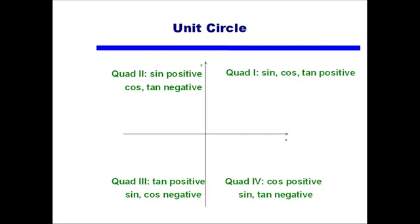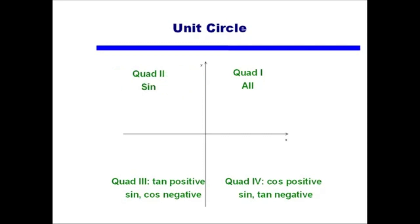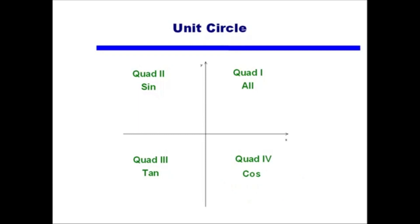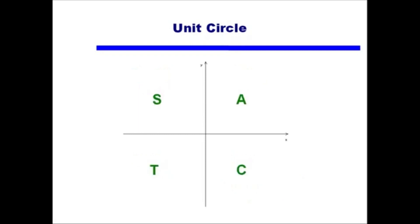Simplifying everything: in quadrant 1, all trig functions are positive. In quadrant 2, just sine is positive. In quadrant 3, only tangent is positive. In quadrant 4, cosine is positive. Some students remember this with the letters A, S, T, C — using the mnemonic 'All Students Take Calculus.' All trig functions are positive in quadrant 1; sine and cosecant are positive in quadrant 2; tangent and cotangent are positive in quadrant 3; and cosine and secant are positive in quadrant 4.